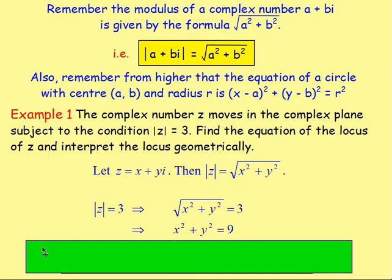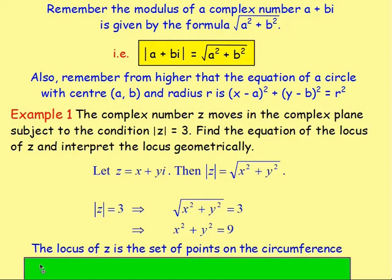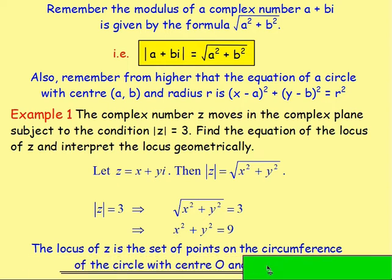The radius: because that equals r squared, 9 is the same as 3 squared, so the radius is 3. So the locus is a circle centred at the origin with radius 3.